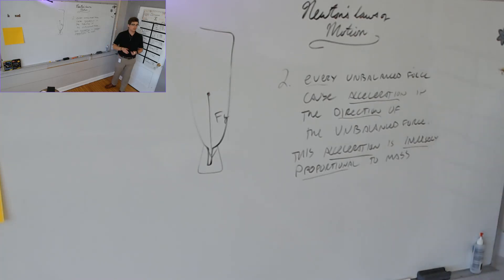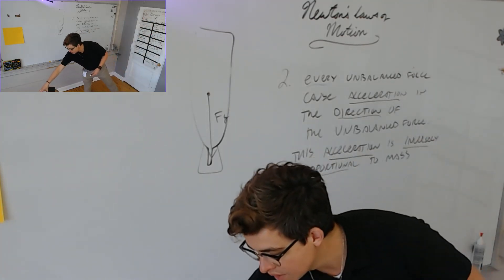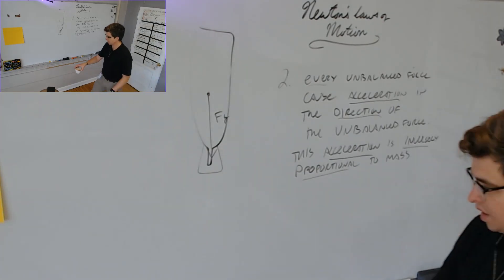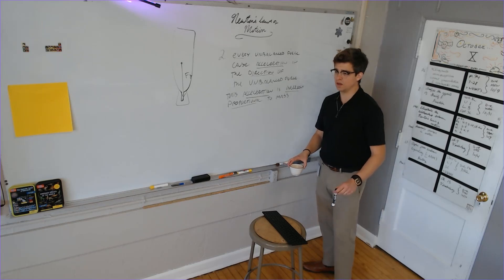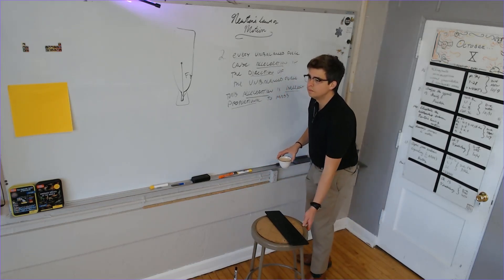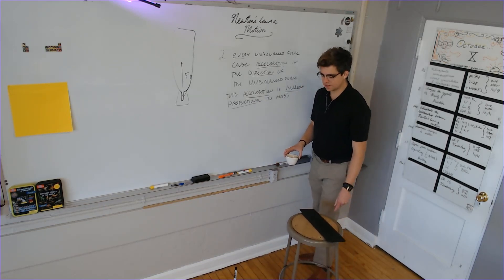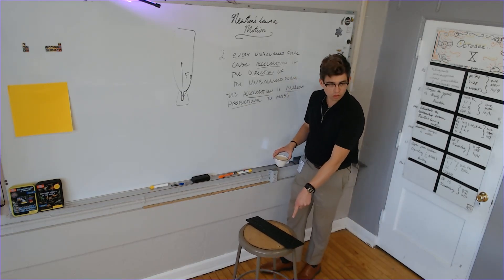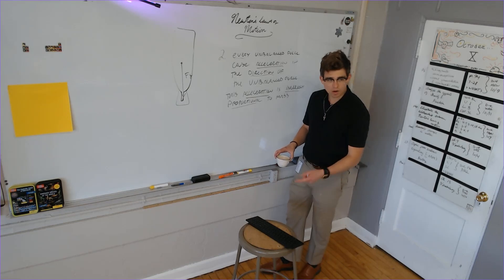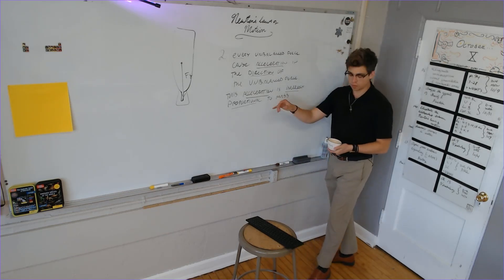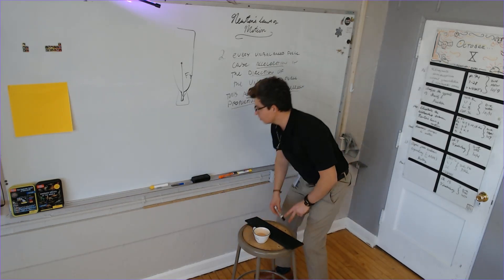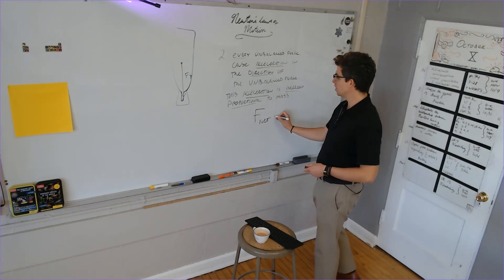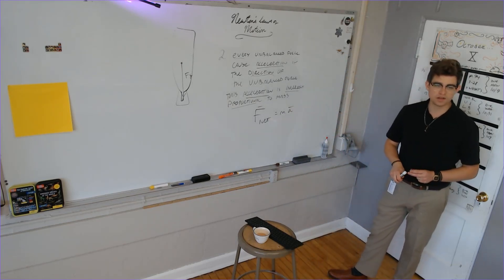So it's inversely proportional to mass, meaning that for a given force, the more mass the object has, the less it will accelerate. More mass, less acceleration. If I put the same force on the marker and the stool with my foot, which one's going to accelerate more? The marker will accelerate more because it has less mass — less mass, more acceleration, inversely proportional. Boot! And there we go — it was true. The one with less mass accelerated more. We oftentimes express this as F net equals MA, where both force and acceleration are vector quantities.